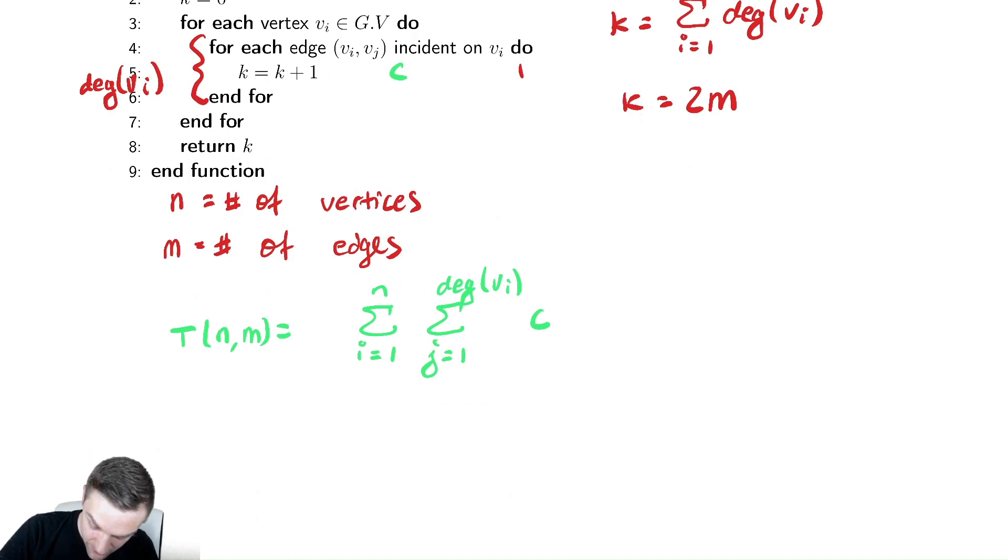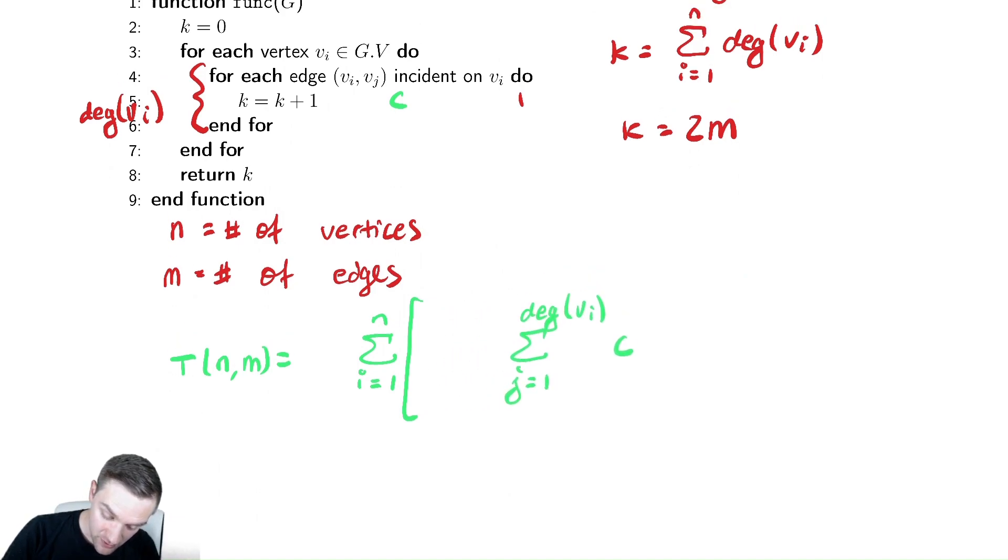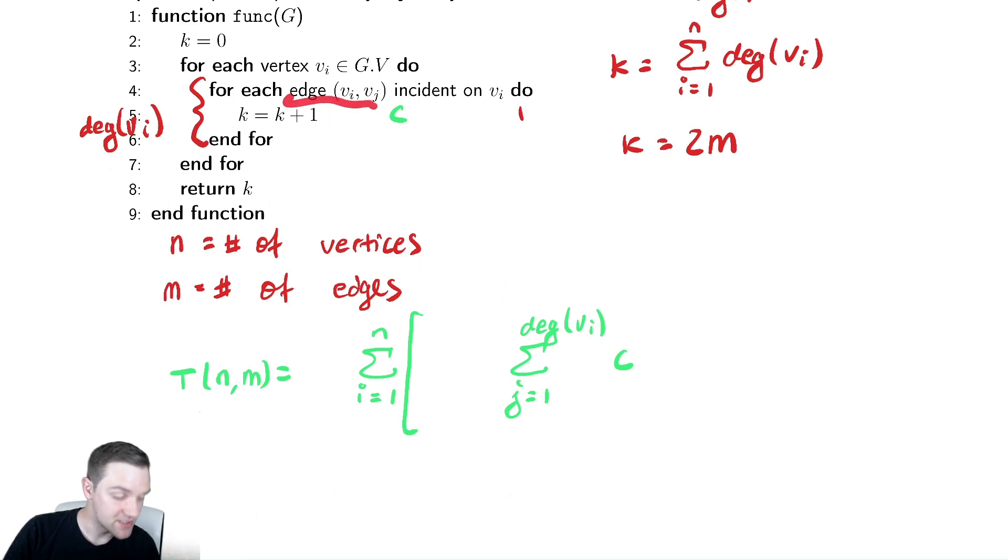No matter what, determining if there are any edges here, you must access some data structure and potentially parse through and determine if it's empty. Therefore, we always have a constant time plus that loop.